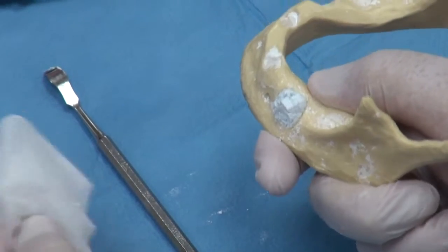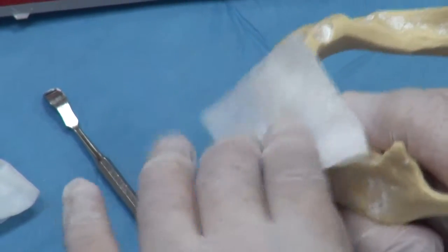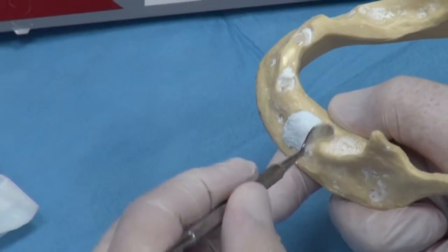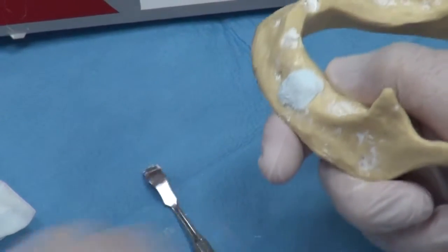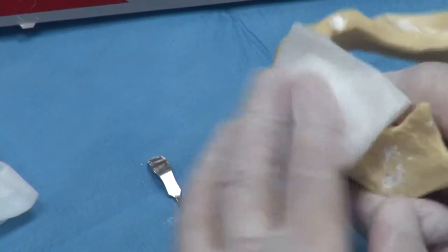We simply take a dry gauze pad and give a firm two to five second compression of the material. You might want to shape your graft a bit with a spatula, and again give a two to five second compression with the dry gauze.